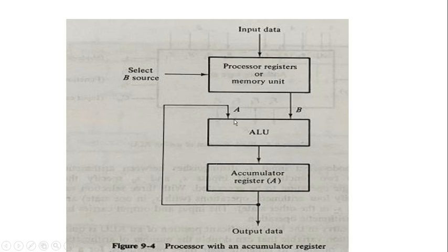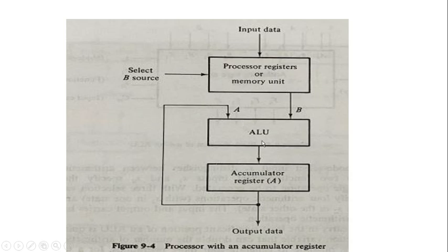The A input of the ALU, initialized with 0, is added with one of the registers from memory or from other processor registers. The resultant value is stored back into register A itself. This newly available result in register A is again added with a new register value by the ALU, and the result is loaded back into register A. This procedure repeats until the entire array is processed. That is how accumulator registers are used for accumulating the added result of a series or array of numbers.